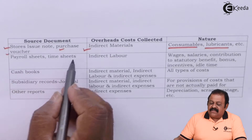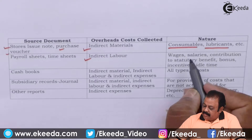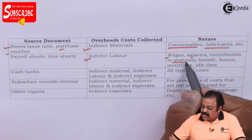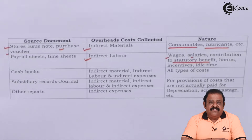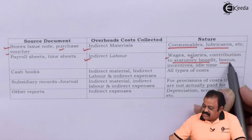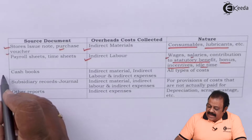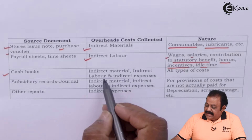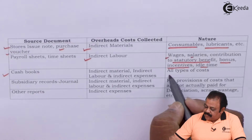The second source document is payroll sheets and time sheets. These help us understand the details of indirect labor, referred to as wages, salaries, contributions to statutory benefits such as ESI, gratuity, or provident fund, bonus, incentives, and idle time. Third, cash books maintained by the organization show indirect material, indirect labor, and indirect expenses — the actual amount spent on all types of cost.